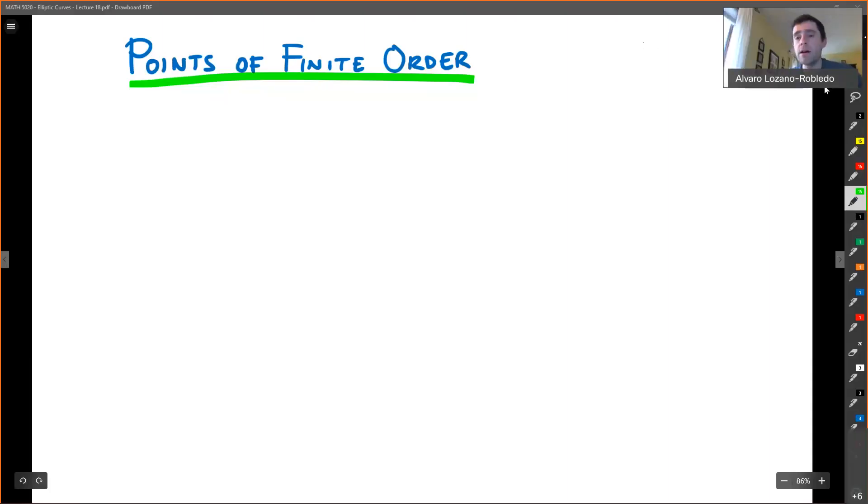All right, welcome back. We're going to talk now about points of finite order over local fields. So here's what I want to prove. I think I'm going to skip the proof today and then prove it next time. It's the following.